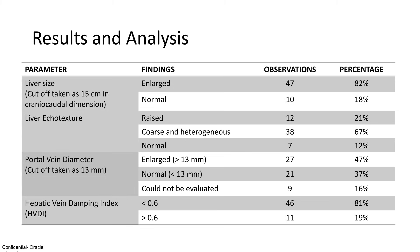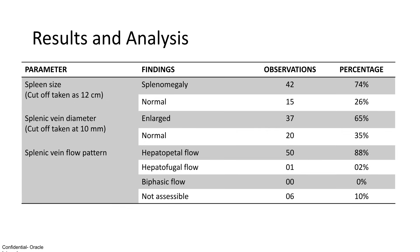From the analysis, we found that 82% of the patients had an enlarged liver and 67% showed coarse and heterogeneous liver echotexture. 47% of the patients had an enlarged portal vein diameter of 13 mm or more, and 81% had a hepatic vein damping index of less than 0.6. Regarding splenic findings, 74% of patients exhibited splenomegaly. The splenic vein diameter was enlarged in 65% of the patients.